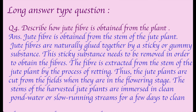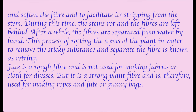The stems of the harvested jute plants are submerged in clean pond water or a slow-running stream for a few days to soften the fibers and facilitate stripping from the stem. During this time the stems rot and the fibers are left behind. The fibers are then separated by hand. This process of rotting the stem in water to remove the sticky substance is known as retting. Jute is a rough fiber used for making ropes and jute or gunny bags.